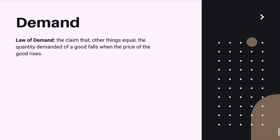So what is the law of demand? The law of demand is the claim that, other things equal — and this is very important — the quantity demanded of a good falls when the price of the good rises. This 'other things equal' requirement is a critical assumption in most of the models and laws we will be discussing.